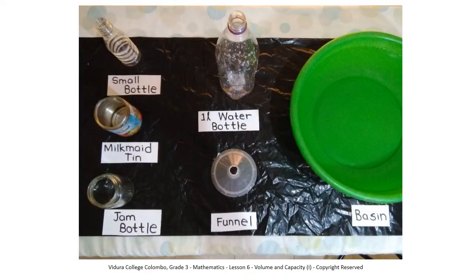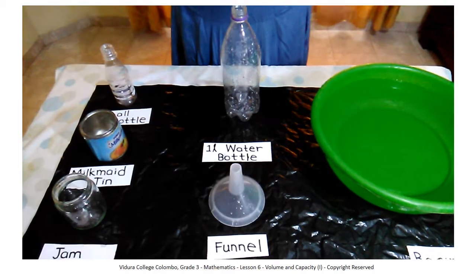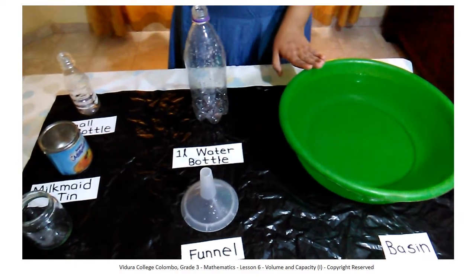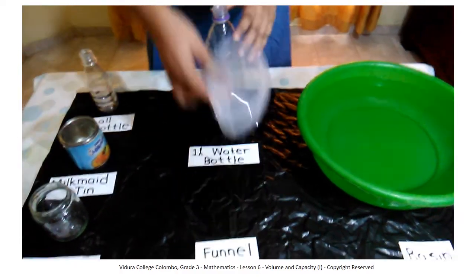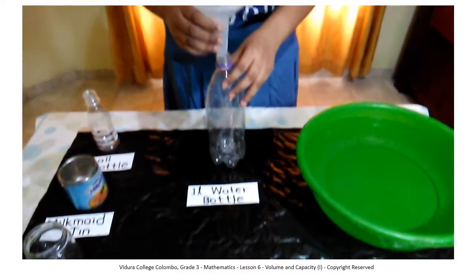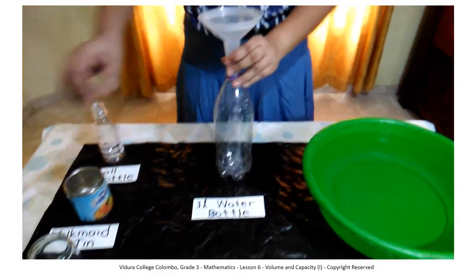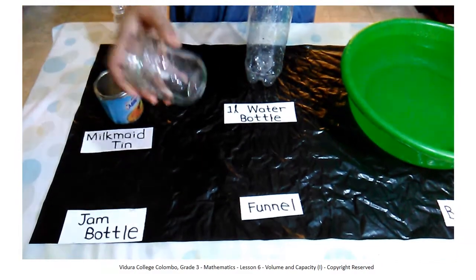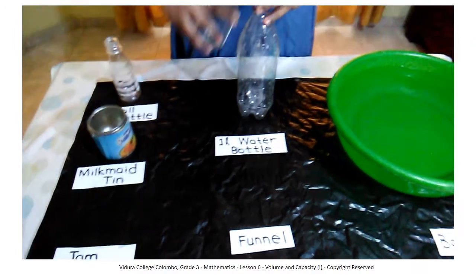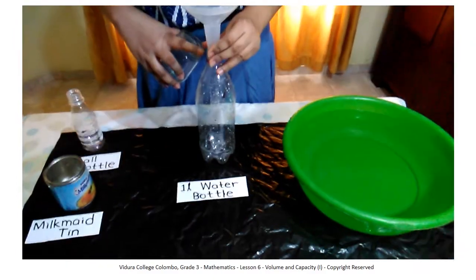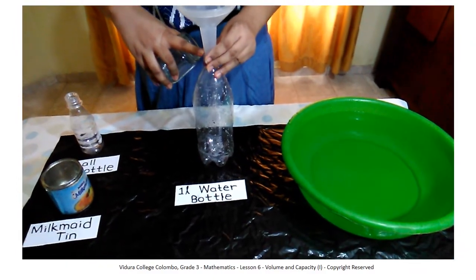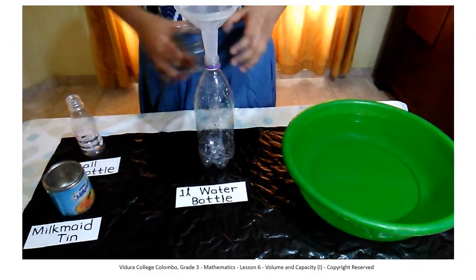Before doing the activity, place all the necessary items on top of a table like this. First, fill the basin with water. Then place the funnel on top of the 1-liter water bottle like this. Then take your first vessel, which is the jam bottle, and start filling this 1-liter water bottle until it gets filled up to the top.